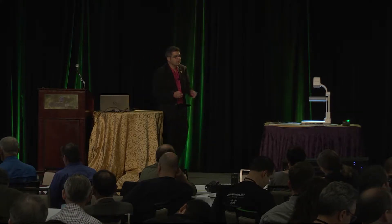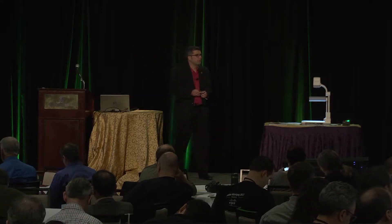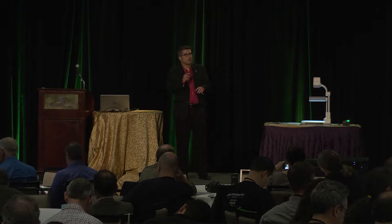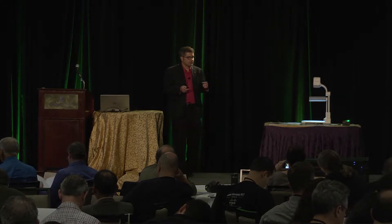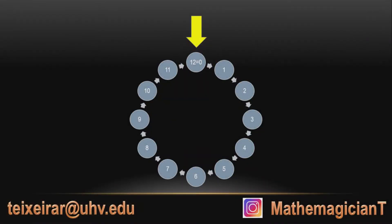So just a little bit of group theory ideas. Imagine you have a clock, a wall clock, and then you have all the numbers there. Well, our hand is at 9 o'clock. Twelve hours from now, it's going to be again at 9 o'clock. So we say that 12 works like a zero.